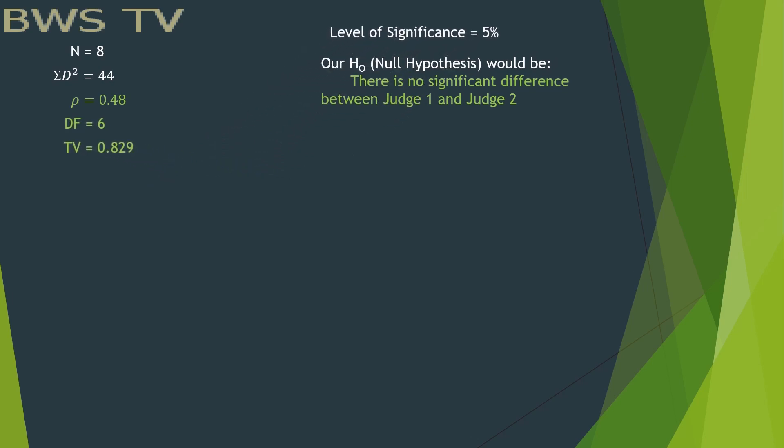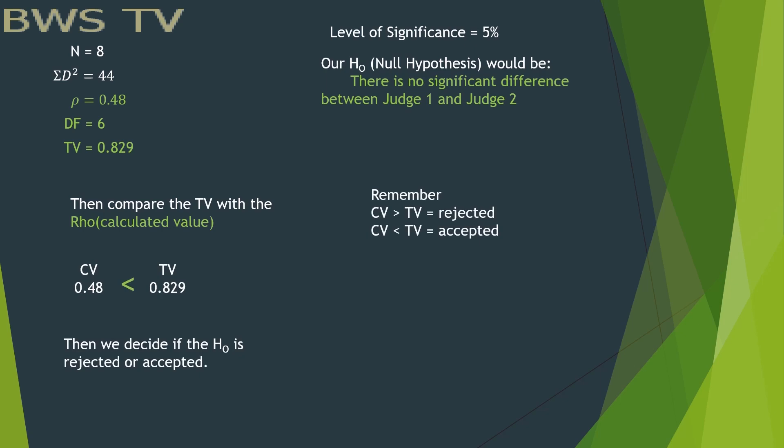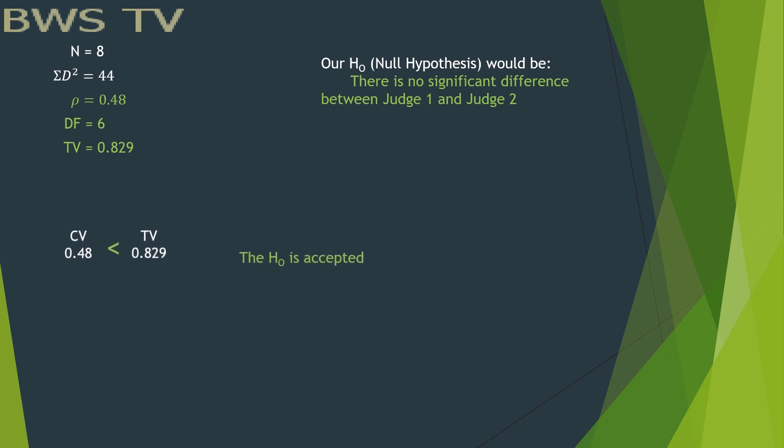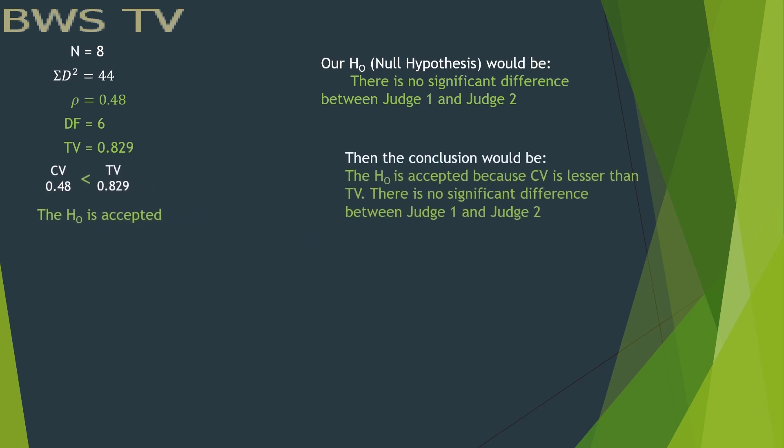After everything is calculated, we have to create the decision by comparing the rho with the tabular value. In this case, our CV, or our calculated value, is lesser than the TV. If CV is less than TV, the null hypothesis is accepted. If CV is higher than TV, the null hypothesis is rejected, meaning the null hypothesis is accepted. If CV is less than TV, there is no significant difference between judge 1 and judge 2.